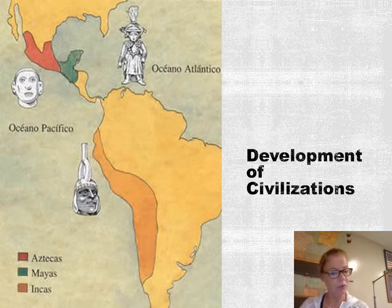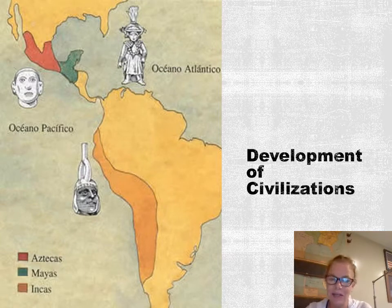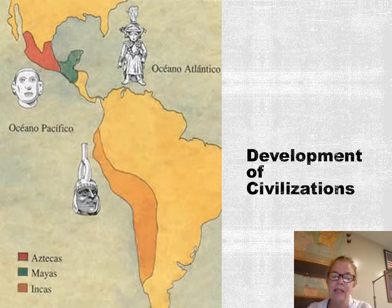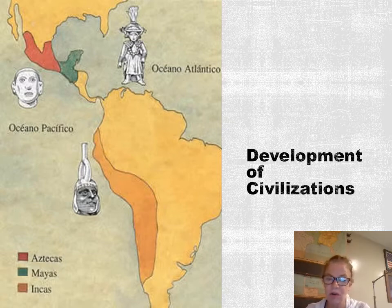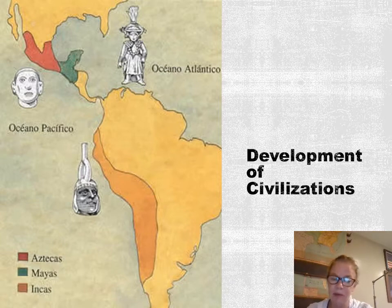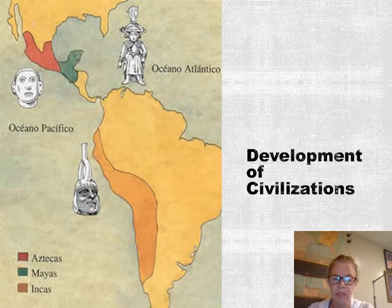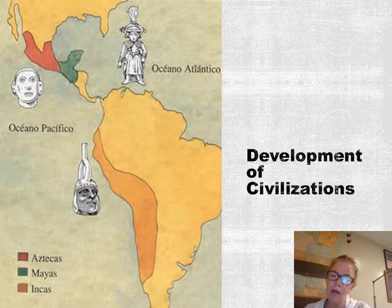Of the vast civilizations, there was maybe one here in the United States that existed prior to Columbus — in Illinois, believe it or not. But primarily you had the Maya, the Aztec, and the Inca. The Maya were located on the Yucatan Peninsula but had actually died out before Columbus came over. The Aztec were conquered by Spanish conquistador Hernán Cortés, and then there were the Inca, located along the Andes Mountains in South America — the largest civilization that existed here — conquered by Francisco Pizarro.